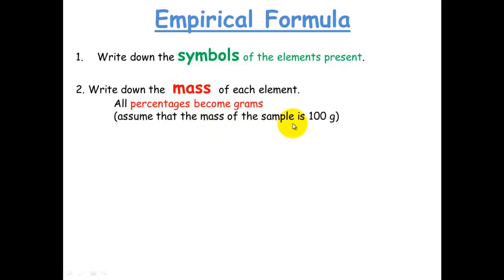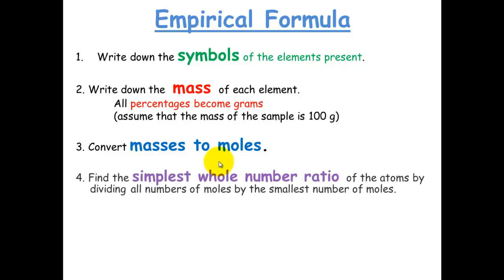You're assuming then that the mass of the sample is 100 grams, which ratio-wise it'll still be fine. Third step is to convert masses to moles because these ratios are in mole ratios. The fourth step is to find the simplest whole number ratio and you do this by dividing all the numbers of moles by the smallest number of moles.